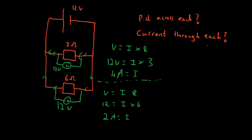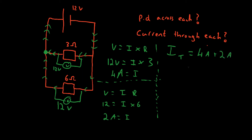If you think about the current — you have electrons going through this branch and electrons going through this branch. At the junction here is where they meet. So here they've both met and so you have the total current, just like at the start they haven't branched off yet and so you also have the total current. The total current is just one branch and the other branch meeting, so you add them up. So if I wanted to work out the total current, I-total is equal to the individual currents of each branch. We've worked both those out: 4 amps plus 2 amps, giving us a total current of 6 amps.